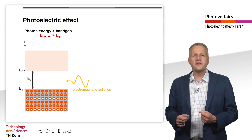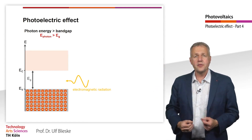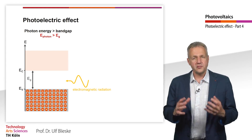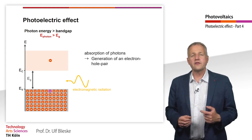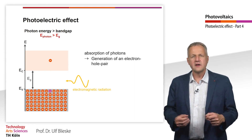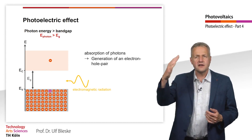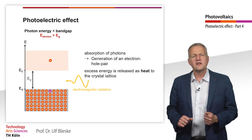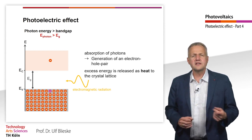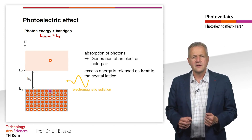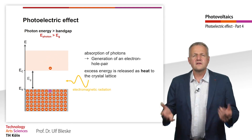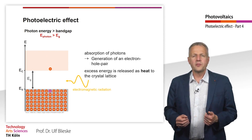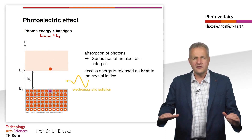If the energy of the photon is now greater than the band gap, the previously described process of absorption takes place and an electron-hole pair is formed. However, the electron now has an energy greater than the lower edge of the conduction band. The excess energy is released as heat to the crystal lattice, and this continues until the electron is in the most favorable energetic state possible in the conduction band.